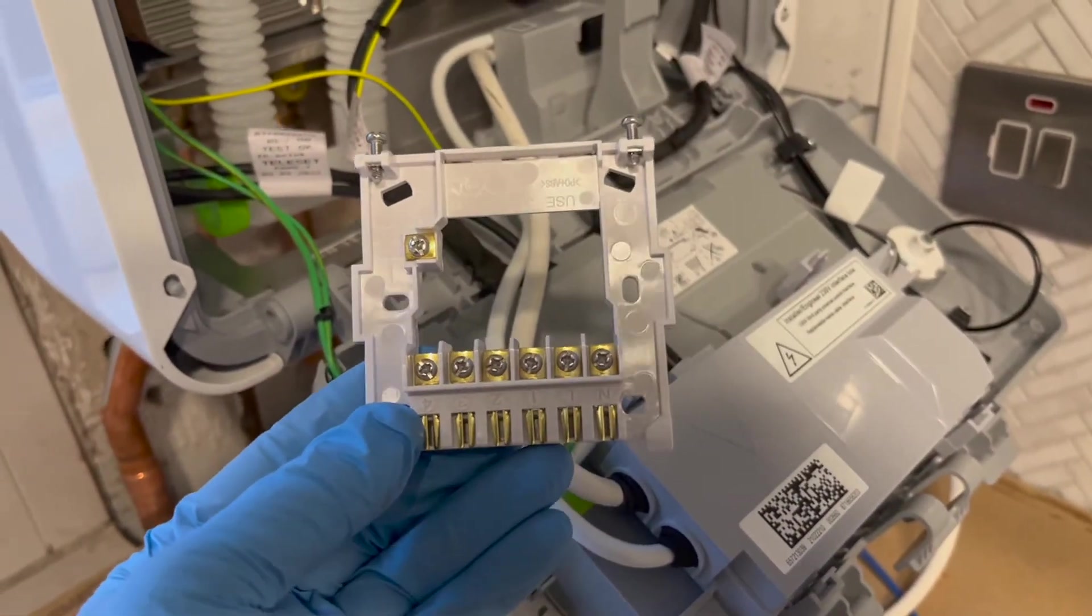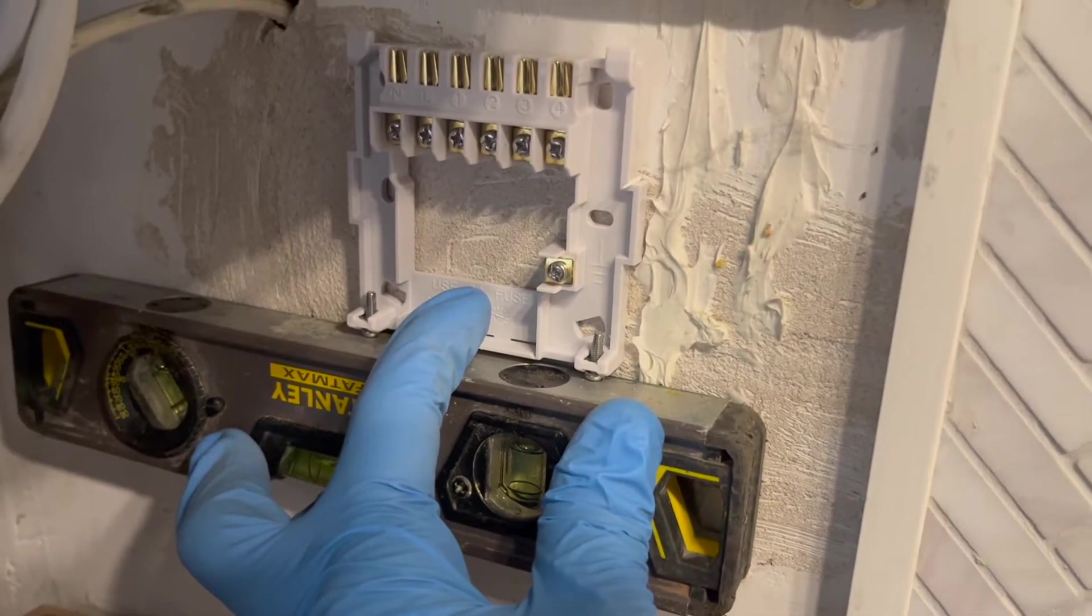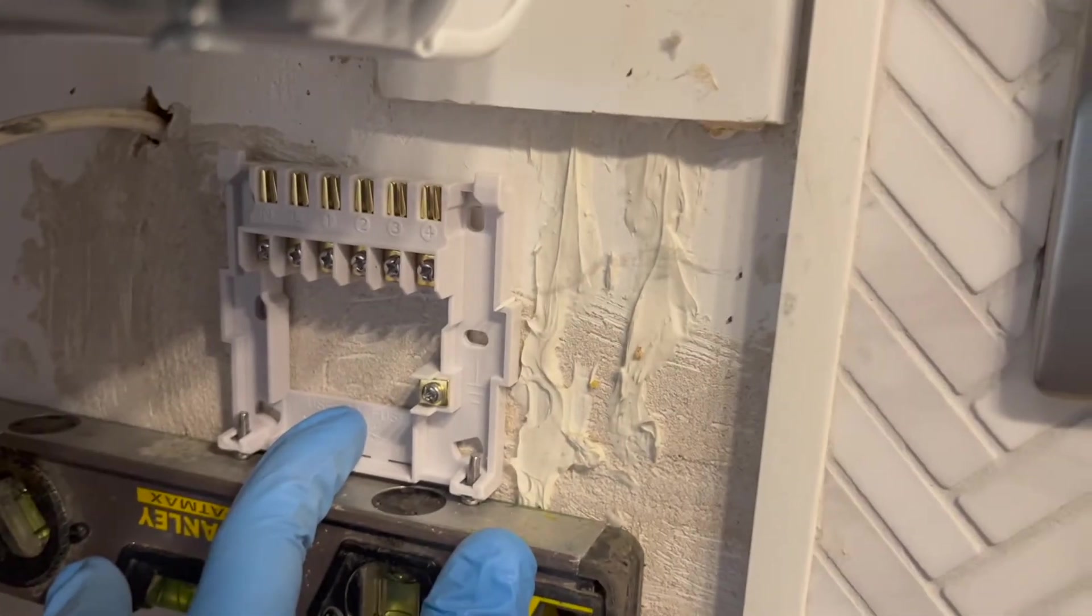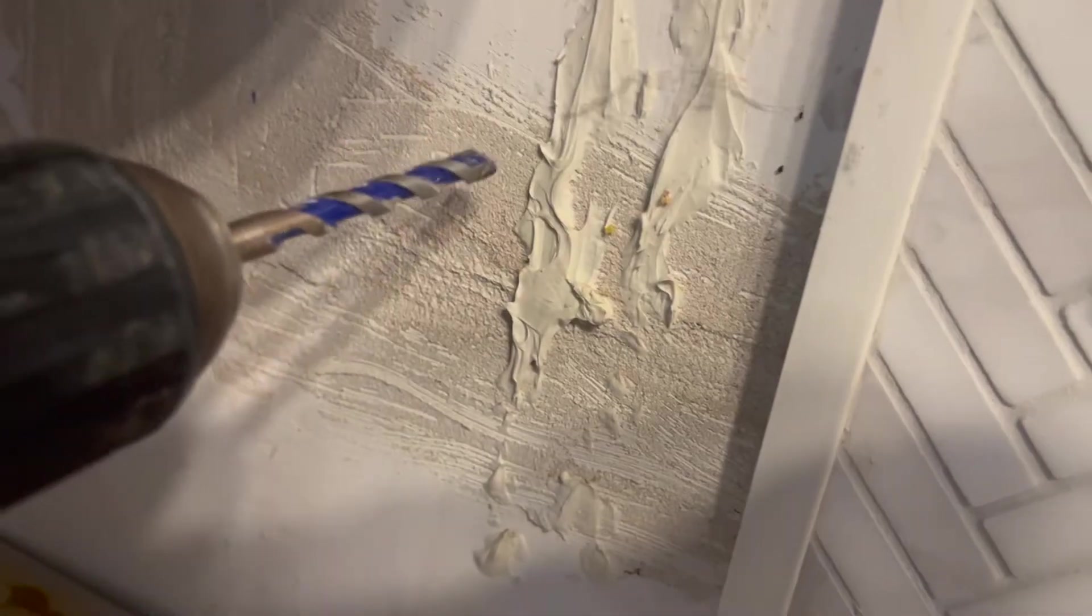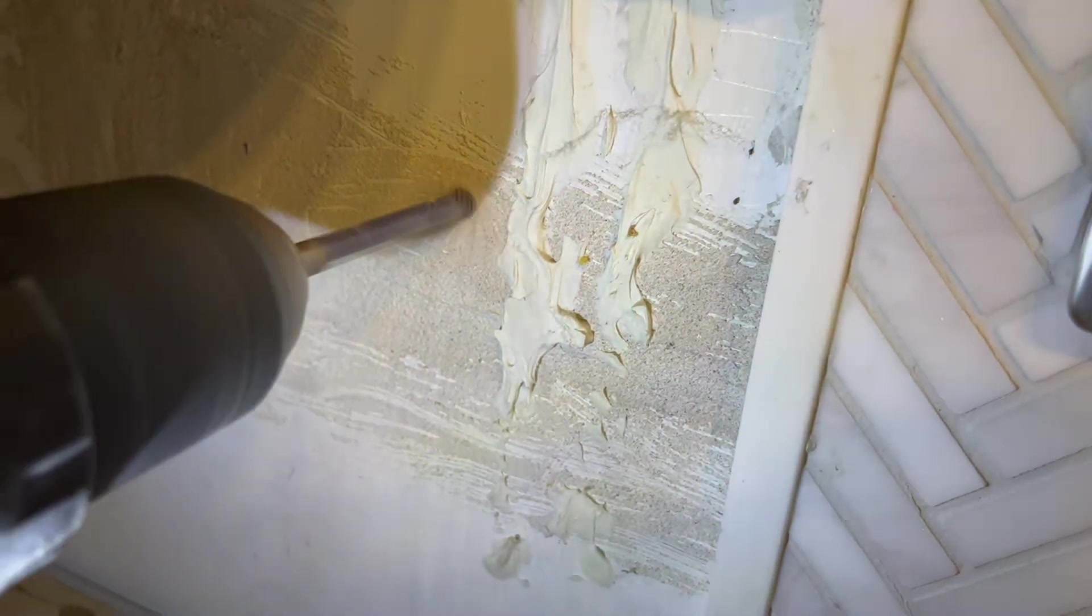Just marking a position of where I want this receiver to be and getting a level. You can see there's a cable on the left and they've plastered over it, so I have to be really careful not to drill where that cable is, but you can pretty much see the route they've taken.